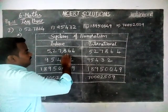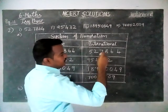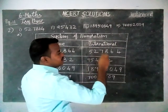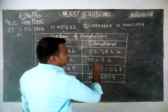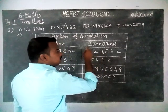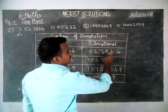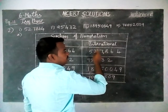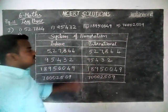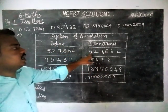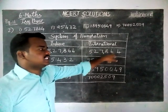In the same case, international system of numeration — from right hand side every 3 digits: 1, 2, 3 — comma — then ones, tens, hundreds, 1000, 10,000, 1,00,000. So the answer is 527,864.